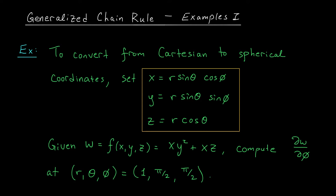But for now, just know that we're dealing with a new coordinate system with three variables r, theta, phi, and we're going to be using this in a basic example on the generalized chain rule. In this question, we're given a function w that depends on our three Cartesian variables x, y, and z. However, we want to compute the partial derivative of w with respect to one of our spherical coordinate variables, phi.